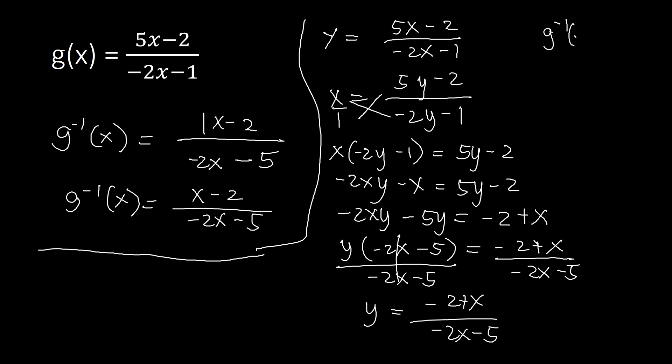As you can see, the long process gives the same result as the shortcut. That is how you apply the shortcut method to find the inverse of a rational function.